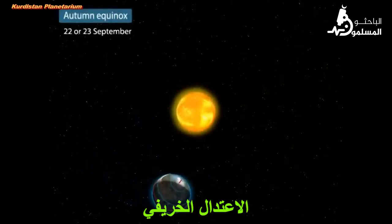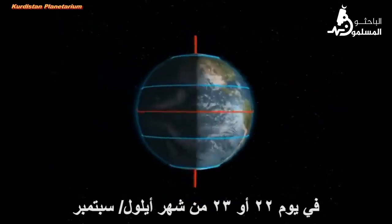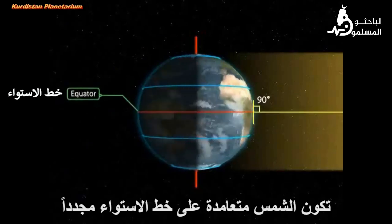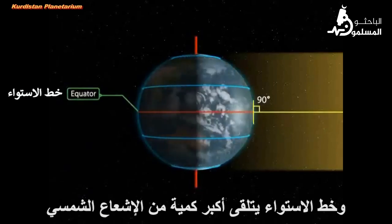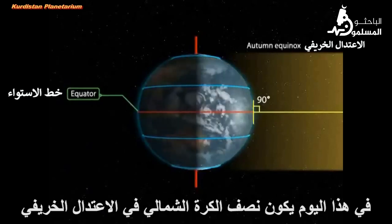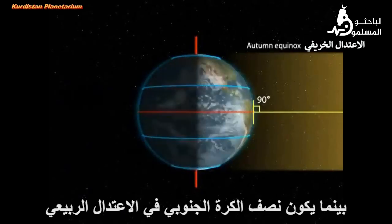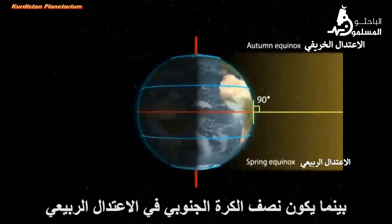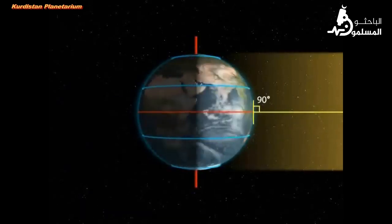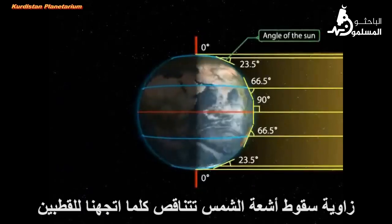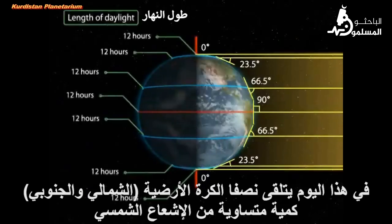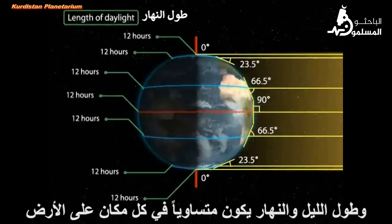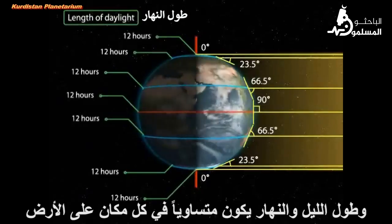Autumn equinox: on the 22nd or 23rd of September, the overhead Sun is over the equator again. The equator receives the largest amount of solar radiation. On this day, the northern hemisphere is in the autumn equinox, while the southern hemisphere is in the spring equinox. The angle of the Sun decreases towards the poles. The two hemispheres receive a similar amount of solar radiation, and the length of day and night is the same at all places on Earth.